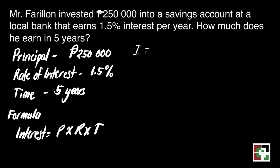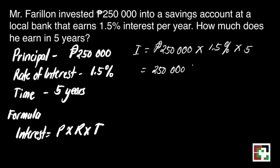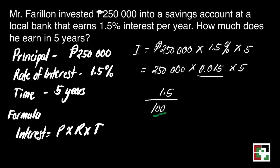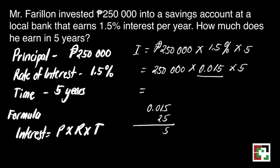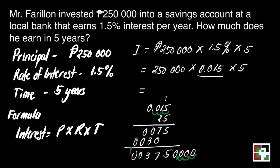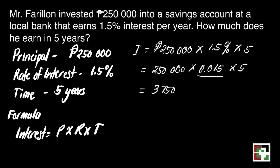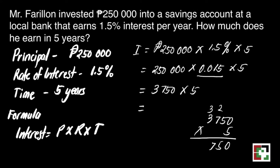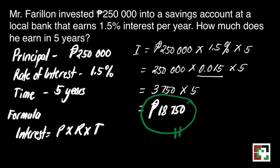Let's substitute. We have 250,000 pesos times 1.5% times 5. We have to convert 1.5% to decimal — that will be 0.015 because when you divide 1.5 by 100, it gives 0.015. We multiply 250,000 pesos times 0.015 and get 3,750, then multiply it by 5. Our final answer is 18,750 pesos — this is what Mr. Farillion will gain after investing his money for 5 years.